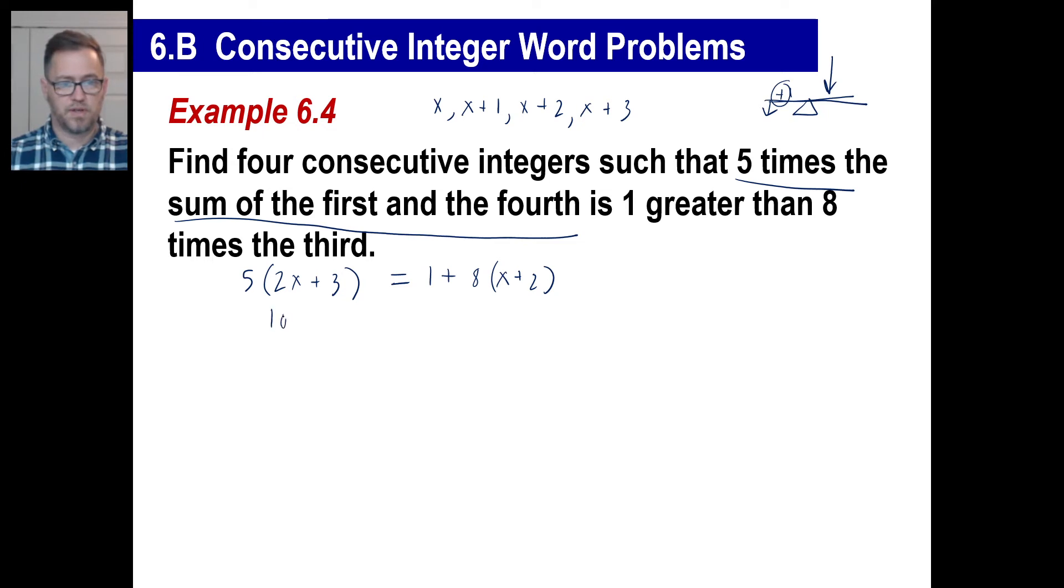So let's go ahead and distribute. 10x plus 15 equals 1 plus 8x plus 16. I'm clonking that 8x over to the left. It gives me 2x. Let's see. That's 1 plus 16 is 17. I'm mashing the 15 over. 17 minus 15 is 2. Well, there we go. x is going to be equal to 1.